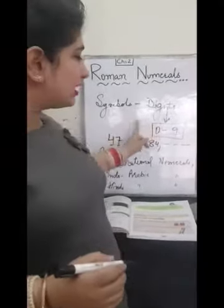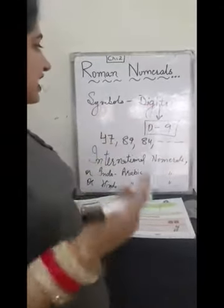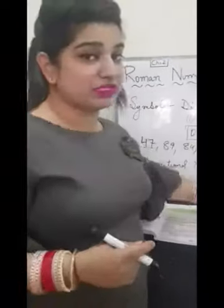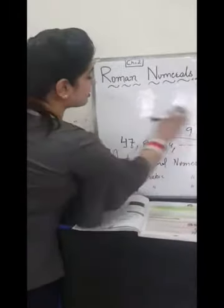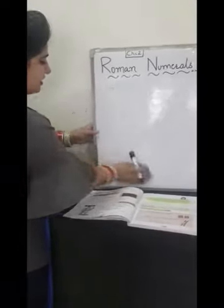See, we are using some digits, we are using some symbols which are called digits. Same way, Romans are also using some symbols. How many symbols? Romans are using total 7 symbols.